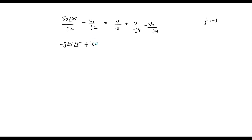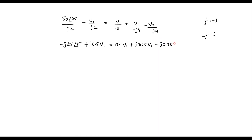Continuing the simplification: 0.5·V1, and 1/(−J) equals +J. So the 1/4 term gives +J·0.25·V1. Similarly, 1/(−J) means +J, giving −J·0.25·V2.